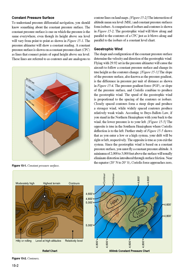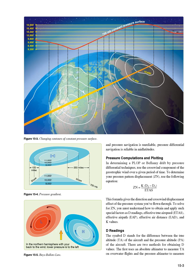Since the geostrophic wind is based on a constant pressure surface, you must fly a constant pressure altitude. A minimum of 2,000 to 3,000 feet above the surface will usually eliminate distortion introduced through surface friction. Near the equator, 20 degrees N to 20 degrees S, Coriolis force approaches zero and pressure navigation is unreliable. Pressure differential navigation is reliable in mid-latitudes.